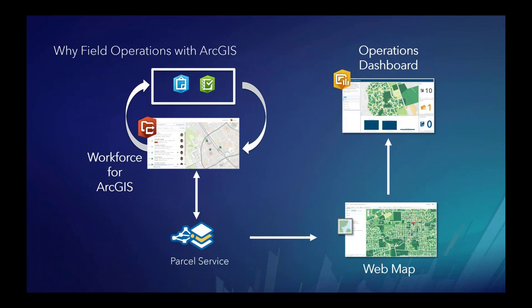Let's take a look at the big picture on how the ArcGIS platform can be configured to support field operations. In this configuration, services are feeding information to a field manager who is using Workforce for ArcGIS to communicate with field staff using Collector to collect property boundaries with a GNSS receiver, as well as field staff using Survey123 to collect tenure information. All information collected in the field is either automatically written back to the service if field staff have connectivity, or synced when they regain connectivity. Even if there is still information being gathered in the field, this service can be shared to a web map which can feed a number of web applications. The web map is feeding an operations dashboard that gives a heads-up view of the crew's progress in the field.